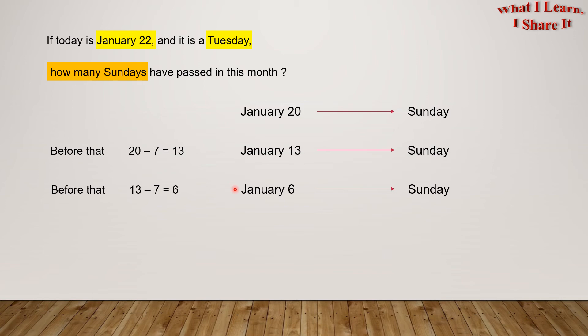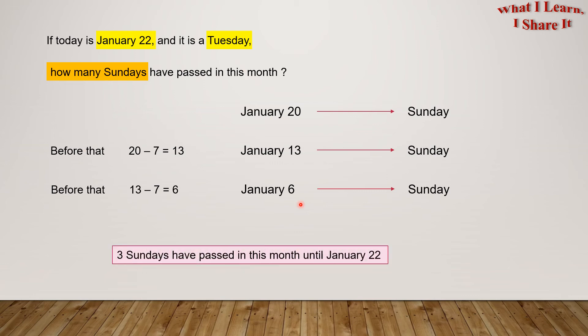But you can't subtract 7 from 6, so this means we have reached the last Sunday. And this means that three Sundays have passed in this month until January 22nd. Yay! We solved the problem!